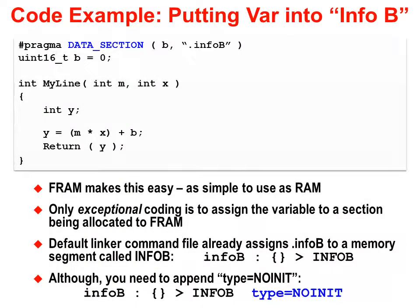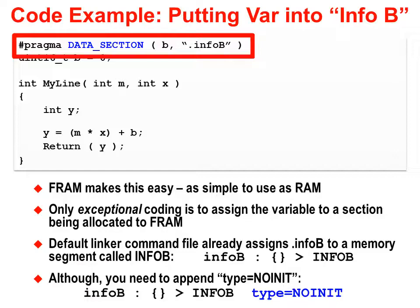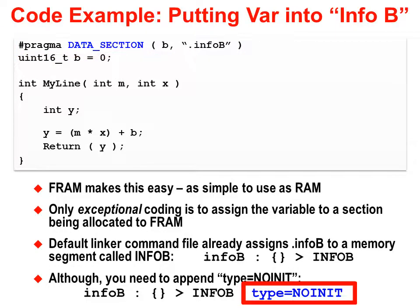Now that we've set up our MPU, what does the code look like to store a persistent — that is, non-volatile — variable into FRAM? In this case, we chose Info B. Essentially, there's nothing fancy that needs to be done, unlike the Flash memory case. We only need to do two things: one, make our persistent variable be allocated from the Info B memory using the #pragma data_section directive; and two, declare the section to be of type 'no init' in the linker command file. If you don't do this, the code generation tools automatically initialize the memory location to zero every time we start up our code.